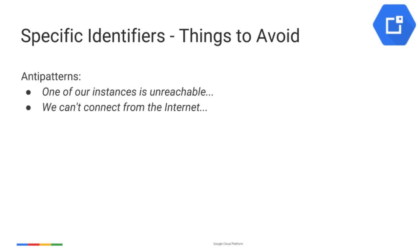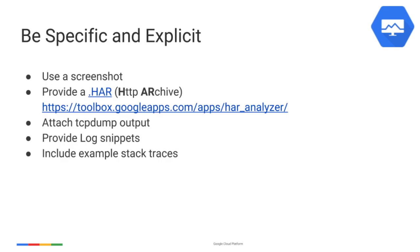You should always provide more specific information than something like 'one of our instances' or 'we can't connect from the internet,' because support will need to gather more information before they can begin troubleshooting, causing further delays. For any information you provide to support, be specific and explicit. If relevant, use a screenshot to show exactly what you see. For web-based interfaces, provide a HAR file or HTTP archive — our documentation has instructions on how to get a HAR file in three major browsers. When troubleshooting networking issues, attach TCP dump output if you collect it, and also attach log snippets and example stack traces you believe to be relevant.